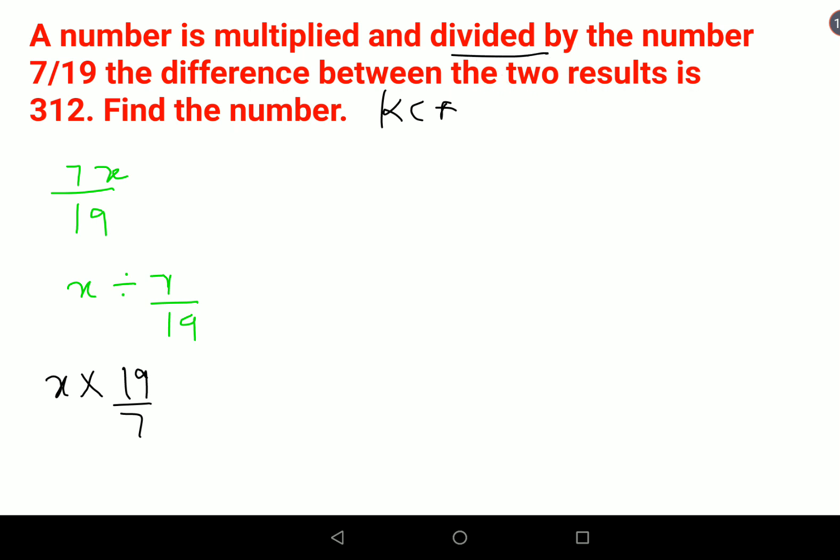They are saying the difference between them, so we subtract the division result from the multiplication result. This equals 312.